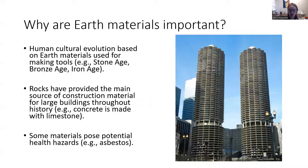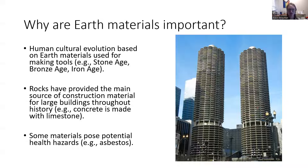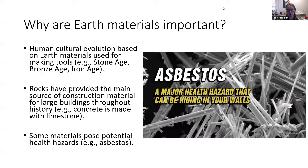This isn't to say that all Earth materials are good for us — we also need to understand the ones that are bad for us. For example, asbestos minerals can be hazardous to our health. So by understanding these mineral properties, we can figure out which ones are good for us, which ones can advance our society and how we can use those, and how we can stay away from the ones that are not so good for us.